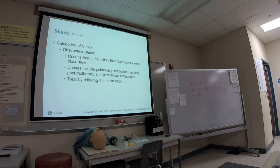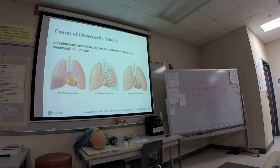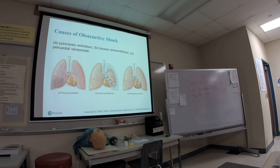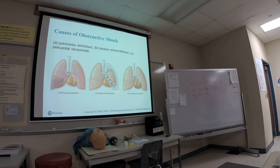Obstructive shock includes pulmonary embolism (PE), tension pneumothorax, and pericardial tamponade — all common in trauma. A PE has a high mortality rate. In tamponade, the pericardial sac fills with blood and the heart can't contract correctly. In tension pneumothorax, the lung shifts into the mediastinum, affecting normal heart contraction.